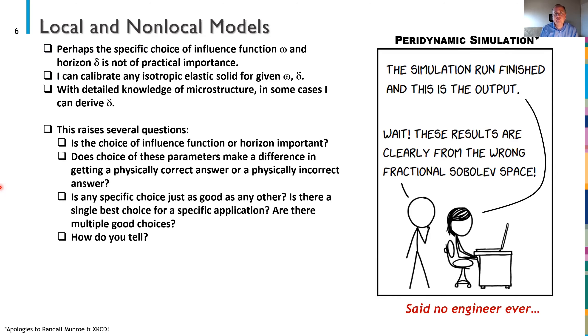Is the choice of the influence function or the horizon important? And perhaps it is perhaps it's not. Is the choice of an influence function or these parameters make a difference between getting a physically correct answer or a physically incorrect answer? And I can show you in fact at least one example where a bad choice of an influence function leads to a physically incorrect answer. But is one choice just as good as another? Is there a single best choice for a specific application or are there multiple good choices? Or maybe there's a family of correct choices and I just need to pick one out of the family. How do you tell?